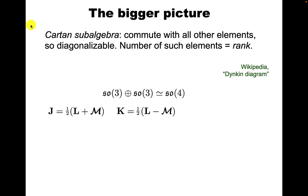Let's zoom out a little bit. We define the Cartan subalgebra as algebra elements that commute with all other elements, so they're diagonalizable. The number of such elements is called the rank. Here we're talking about two SO3 algebras formed by J and K. So you can draw a Dynkin diagram - you draw a dot for each of these commuting elements. SO3 only has one, so they get one each, whereas SO4 has two. So the rank of the SO4 algebra is two, and the rank of each of these is one.